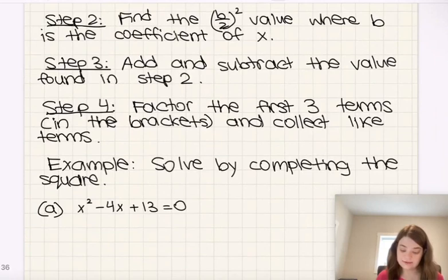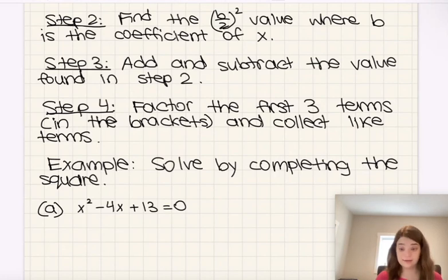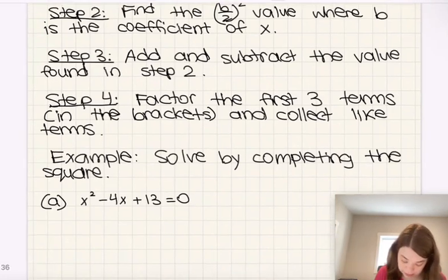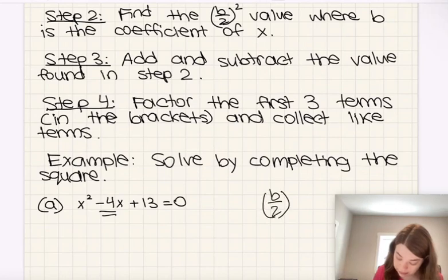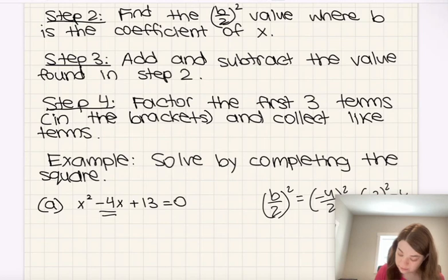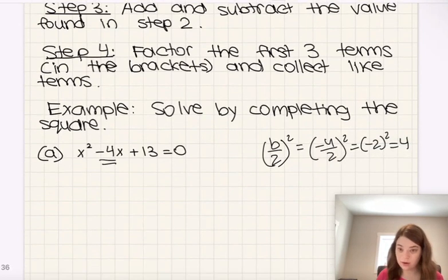Step two says to find the b over 2 squared value, where b is the coefficient of x. In this case, the b value would be negative 4, because negative 4 is our coefficient of x. So b over 2 squared is equal to negative 4 over 2 squared, which is negative 2 squared, which is 4. So the b over 2 squared value is 4.